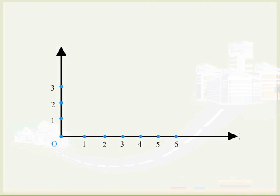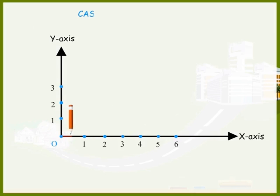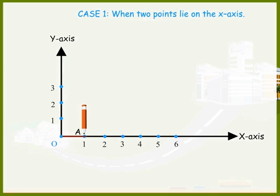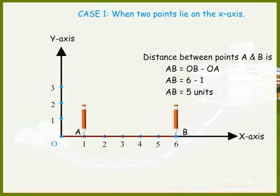Let us learn how to find the distance between two points. Consider the first case when the two points lie on the x-axis. Distance between points A and B is equal to OB minus OA, that is 5 units.